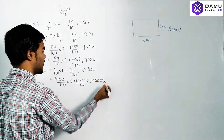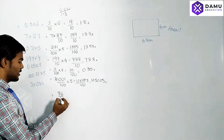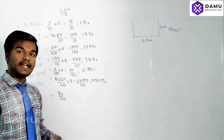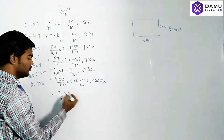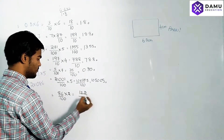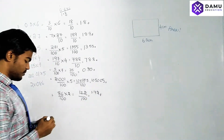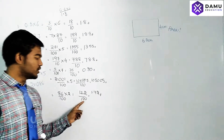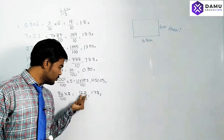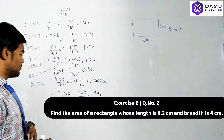Next: 0.86 into 2. After the point two places are there, so we write 86 by 100 into 2. Multiplying: 2 sixes are 12, 2 eights are 16 plus 1 is 17. So 172 by 100. There are two zeros in the denominator, so from the right side we leave two places and put the point — the answer is 1.72.